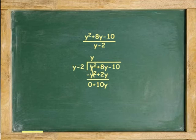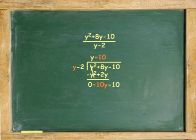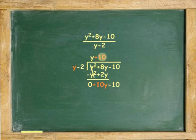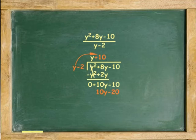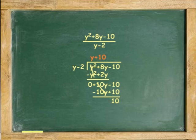To start the second cycle, like in regular division, bring down negative 10 and place it next to 10y. Divide 10y by y and place the quotient above next to y, and multiply y minus 2 by 10 and subtract algebraically. Answer: y plus 10 with 10 over y minus 2 remaining.